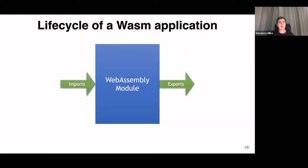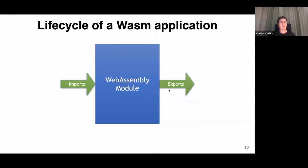A WebAssembly module can be considered like a black box with imports and exports. It can't interact with the operating system or browser except through imports — for example, to access a file system or print to the console, the module must use imports in its import section. WebAssembly modules can only operate by a request-and-response model: when we call an exported function, that triggers internal work.